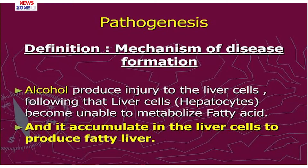What about pathogenesis of the disease? It means the mechanism of the disease process caused by the etiological factor. Using the same example — we know that chronic alcoholism is the cause of fatty liver. The second question is: how does alcohol cause fatty liver? We know the normal anatomy and histology of liver cells, the hepatocytes, and one of their important functions is to metabolize body fat. But alcohol causes liver cell injury, so the cells cannot metabolize fat; rather, fat accumulates within them. That is the cause of fatty liver.